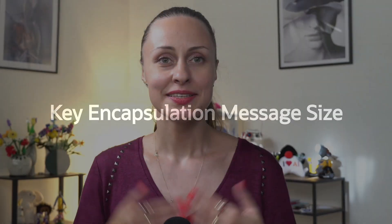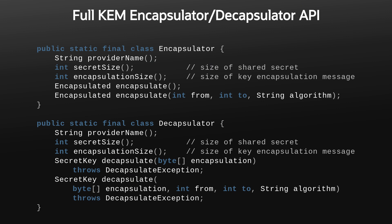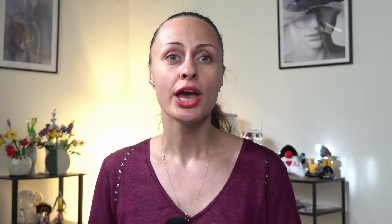Let's see how you can extract the key encapsulation message from concatenated data. Higher-level protocols like hybrid TLS key exchange can directly concatenate key encapsulation messages with other data, without including any length information. In these scenarios, it is assumed that the length of the key encapsulation message remains fixed and known once the KEM configuration is set. When an application needs to extract the key encapsulation message from concatenated data, you can use the encapsulation size methods to retrieve the exact size of the key encapsulation message, enabling precise extraction and utilization of the encapsulated information.